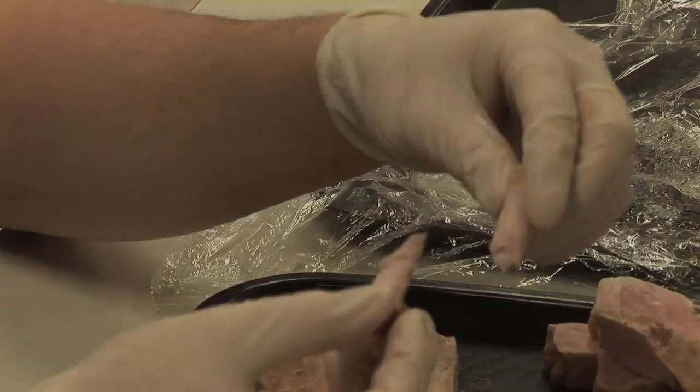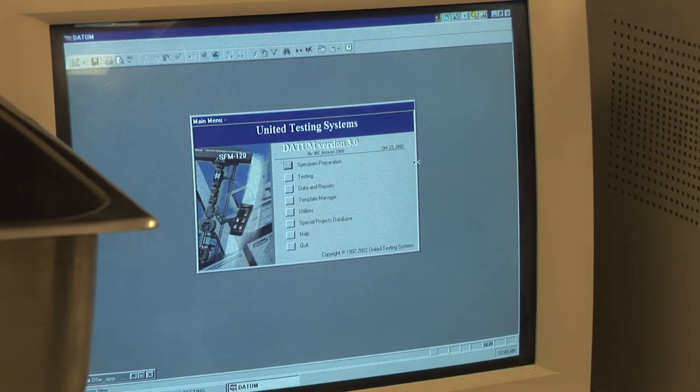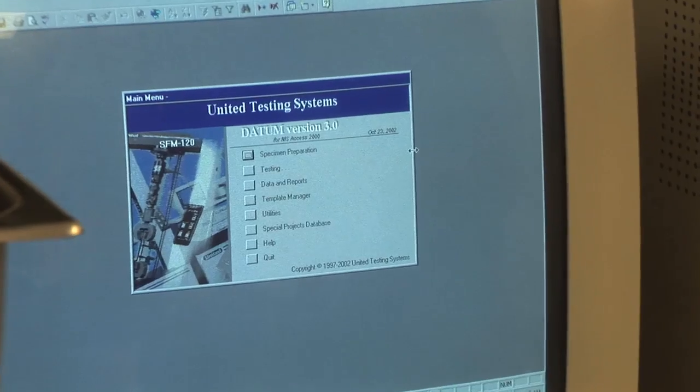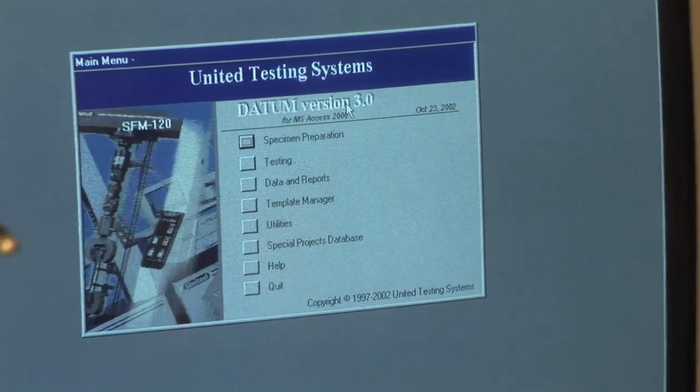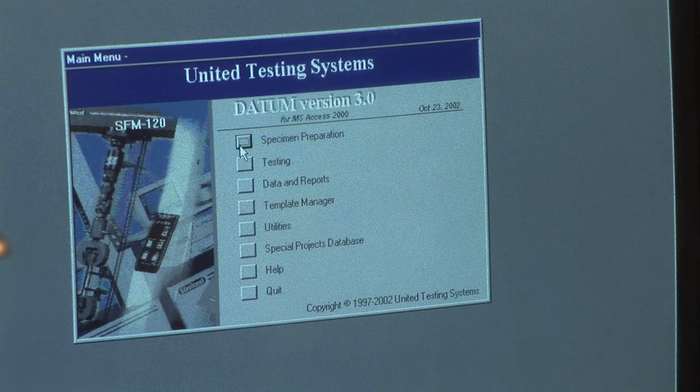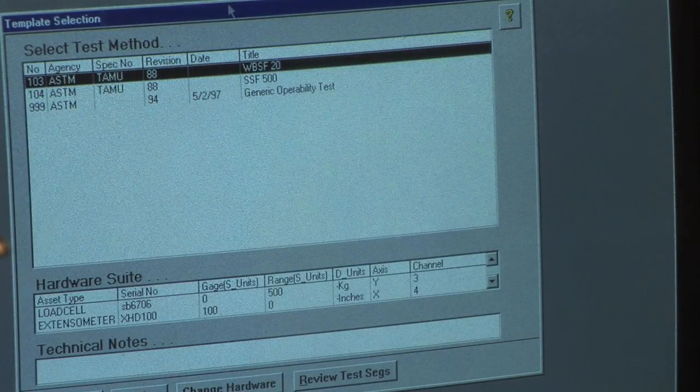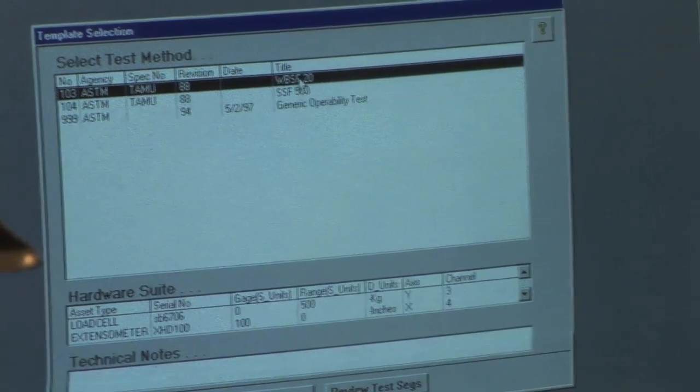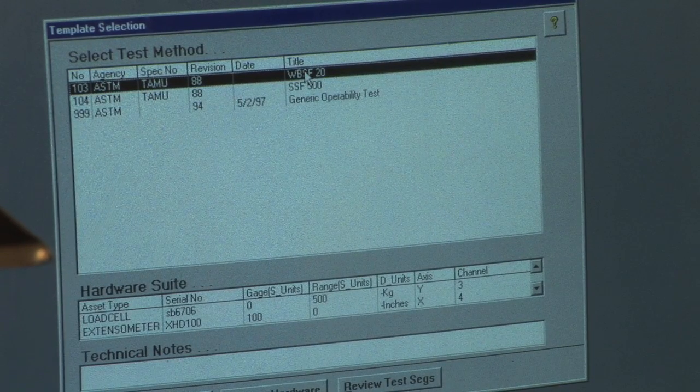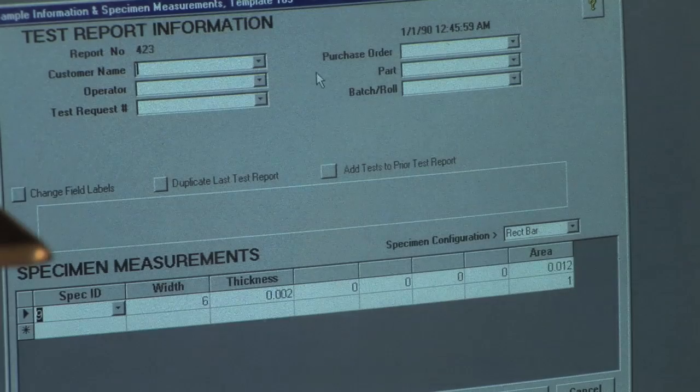The United Testing System, this is the system we use here at Texas A&M. This is how we start off every time we check for tenderness. First off, you go to specimen preparation. You check which test you want, whether it's slice shear or Warner Bratzler shear force. So we're going to double click on Warner Bratzler.